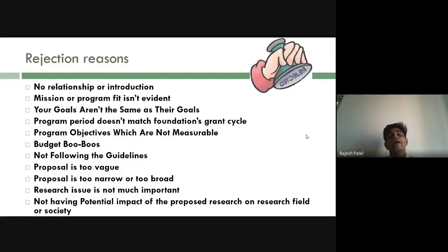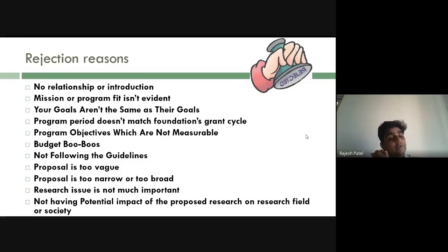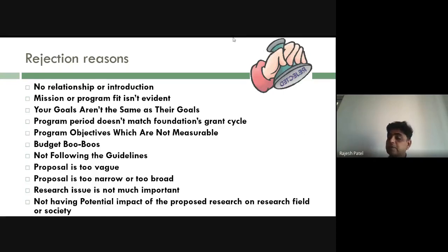Research issues that are not of national or agency importance also lead to rejection. Even if you are excited about your own project, if it is not aligned with the funding agency's priorities, it will be rejected. The best approach is to check the list of already-funded projects on the funding agency's website for the last three to five years. You can also check the biodata of listed expert reviewers to understand their interests.